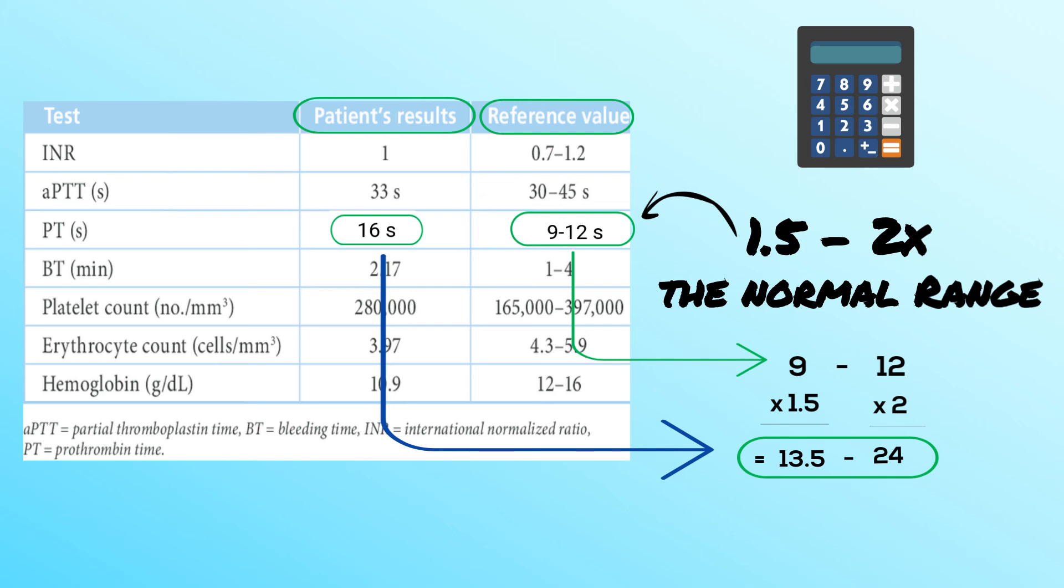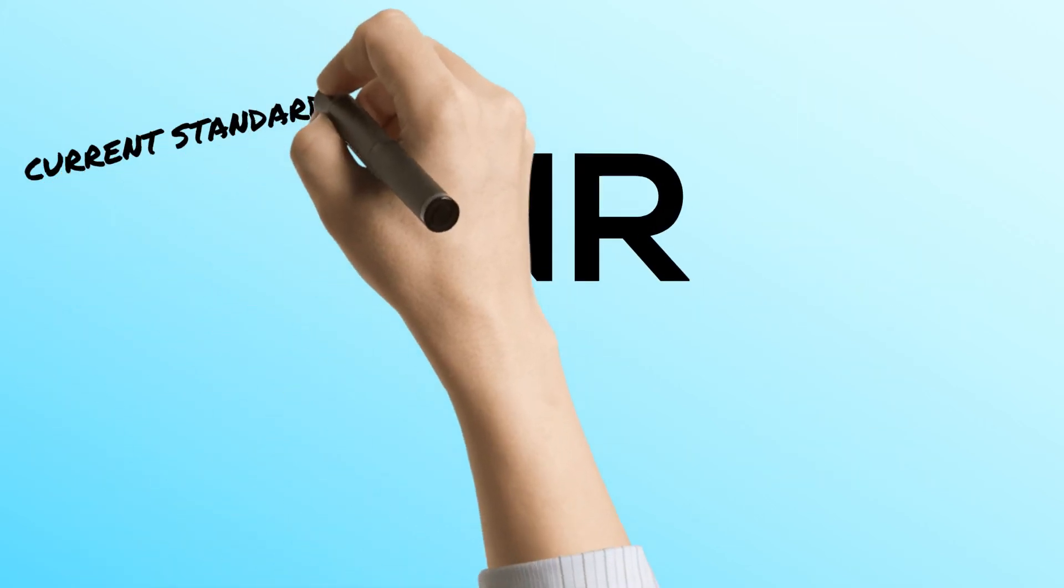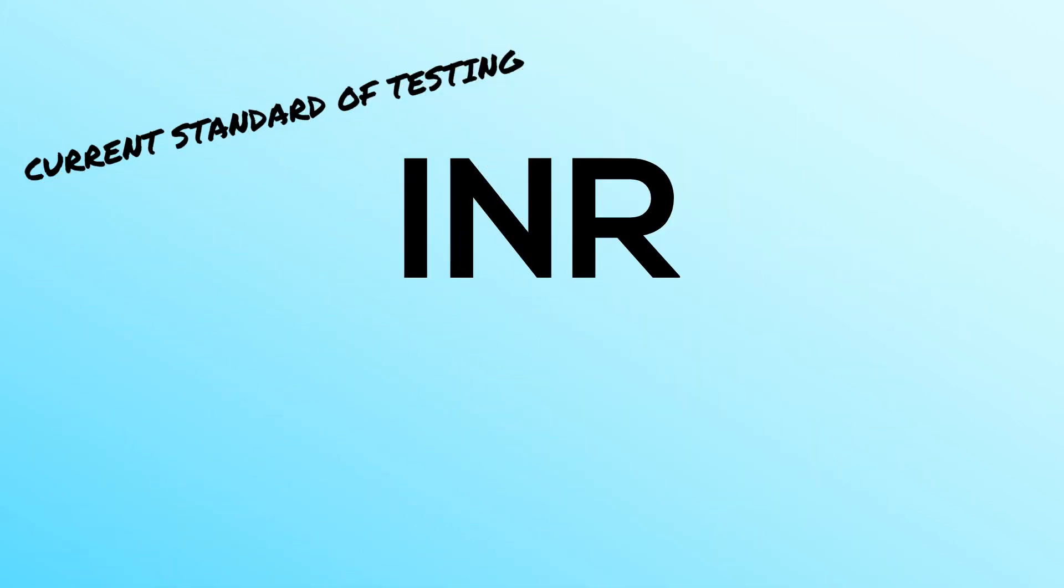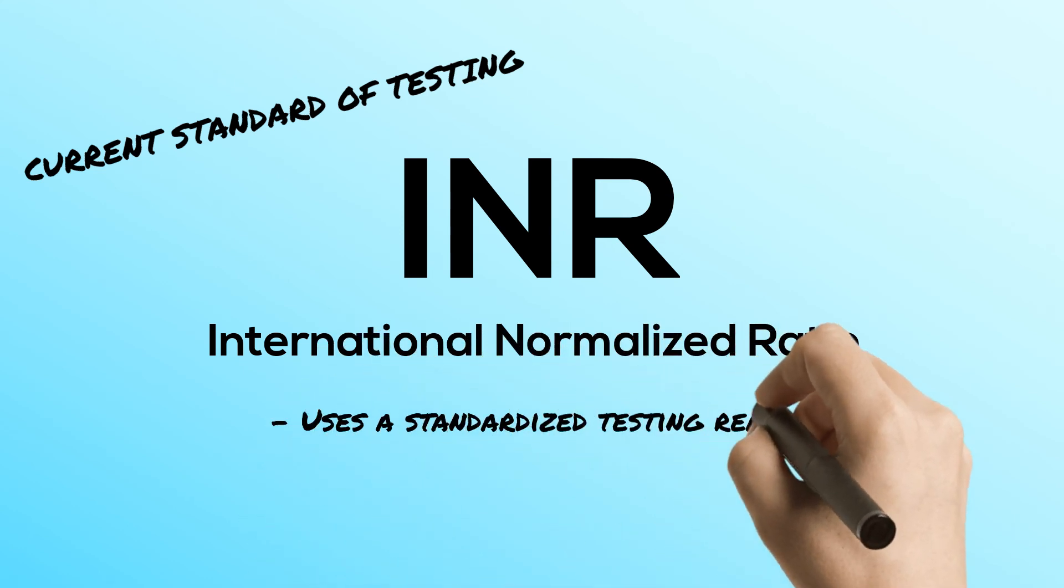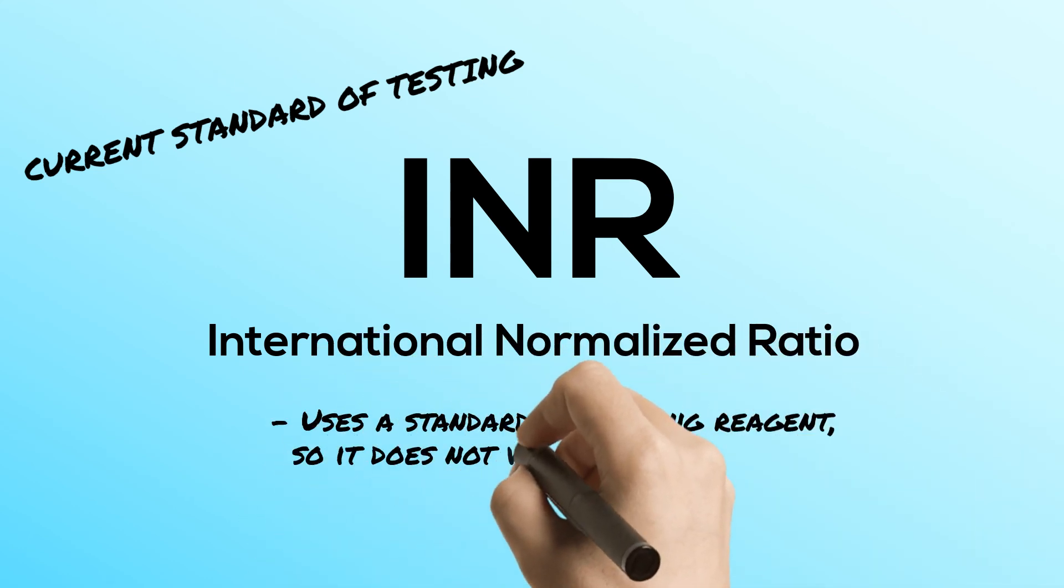The current standard of testing for anticoagulation therapy is the INR. INR stands for International Normalized Ratio. The INR uses a standardized testing reagent, which means it can be used in any lab around the world with no variation in results.